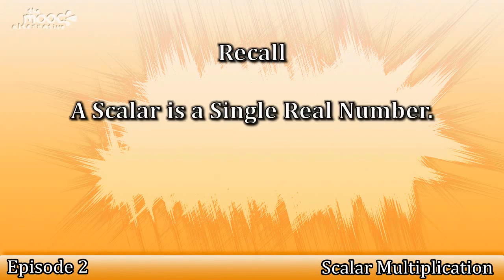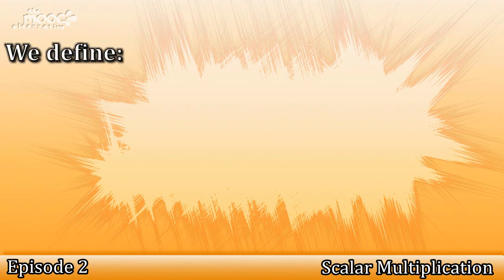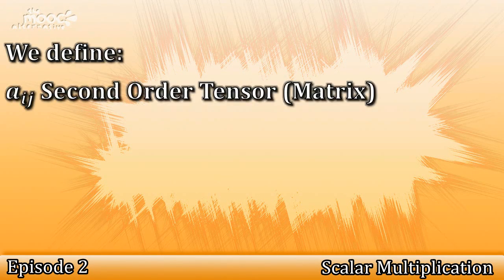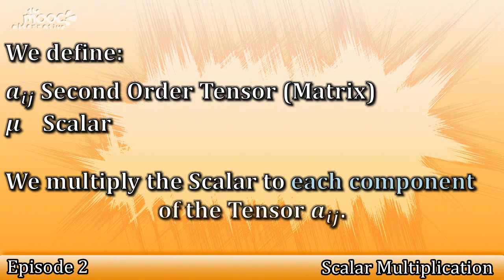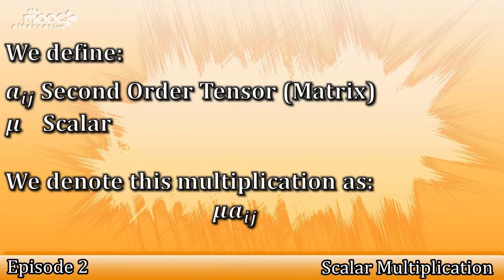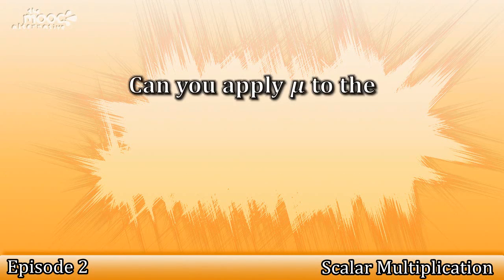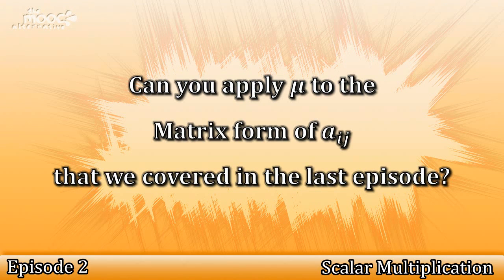Let's now have a look at a scalar. Remember, a scalar is a single real number. Because of this, multiplying a scalar to a tensor of any order is simple. For example, we have a second-order tensor a_ij and a scalar mu. Multiplying a scalar to a tensor simply means we are multiplying mu to each component of a_ij. We denote this multiplication as mu * a_ij. Can you think of how we apply mu to the matrix form of a_ij that we saw in the last episode?